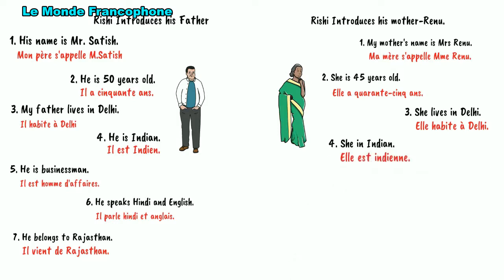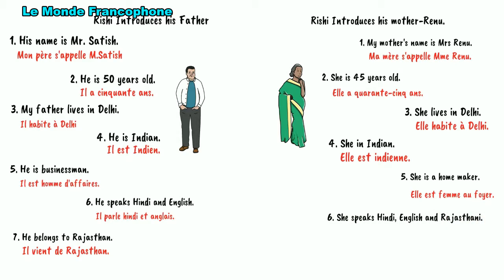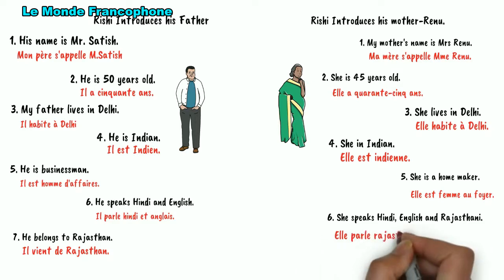The next thing he can talk about is his mother's profession. We will cover a full list of professions in our next video. So if Rishi's mother is a homemaker, in French we will say: Elle est femme au foyer. The next thing is the languages she speaks — she speaks Rajasthani, Hindi and English. So: Ma mère parle Rajasthani, Hindi et Anglais. This is how he is going to present his mother.